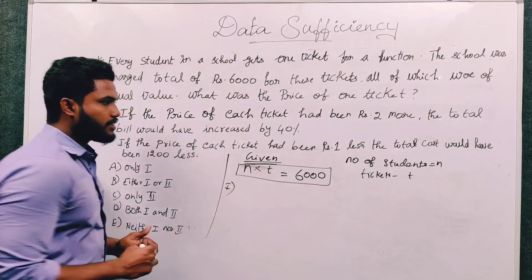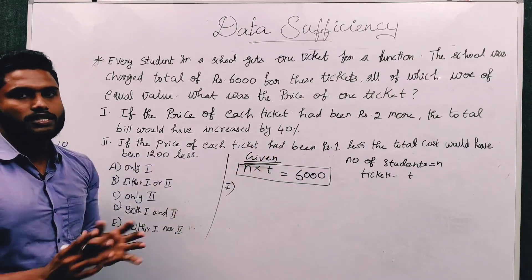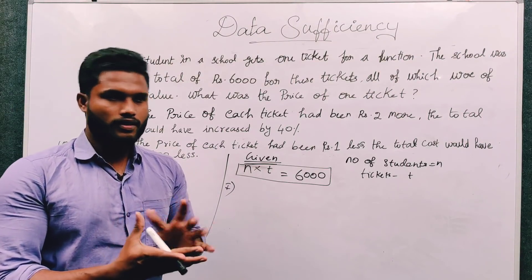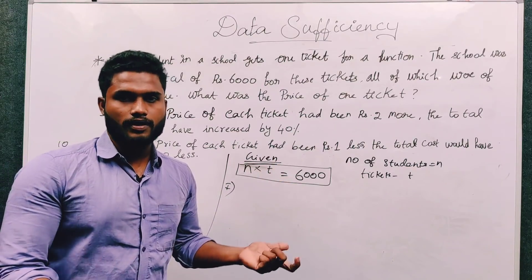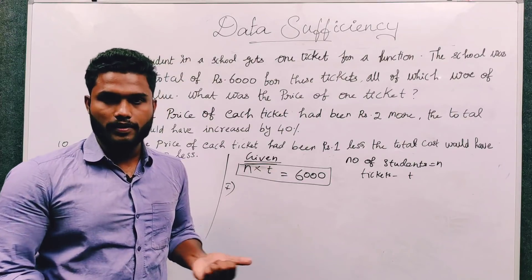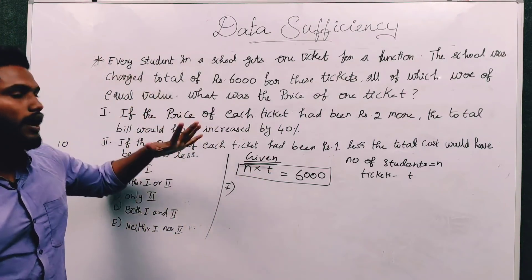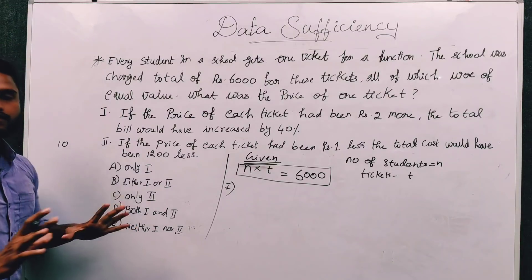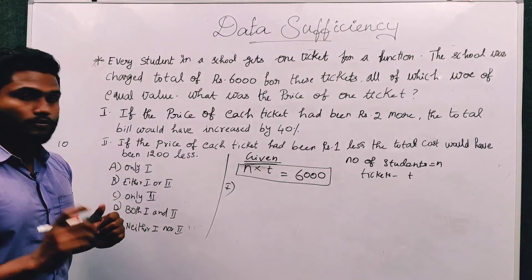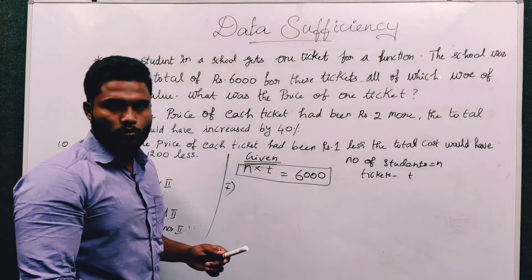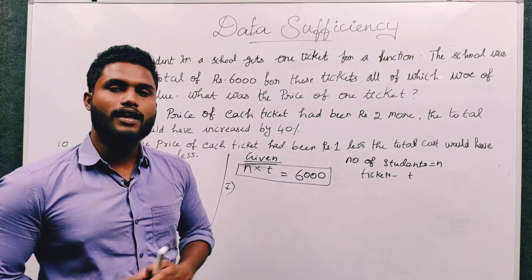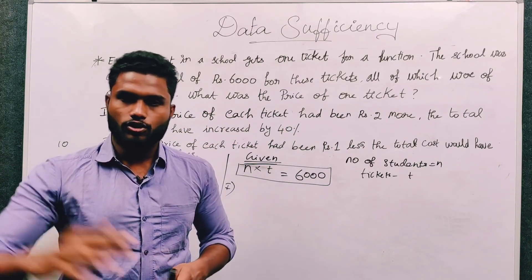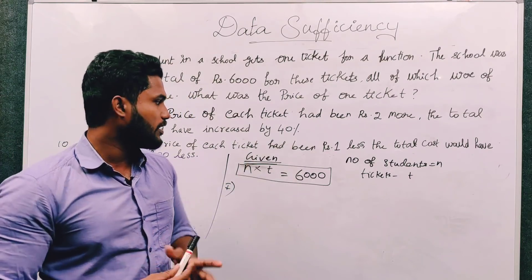Let's check Statement 1. The given information in Statement 1 — on its own — may not be sufficient. If the price of each ticket had been Rs. 2 more, then the total value would increase. Students remain the same, so if we put it into the total value, the price is increased.